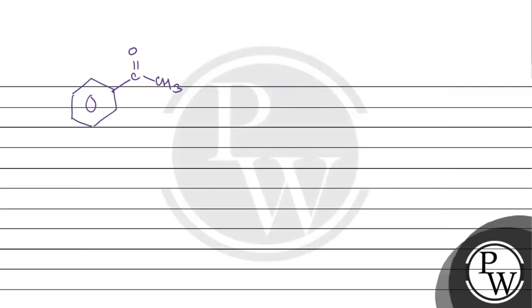So this in the presence of Zn-Hg and concentrated HCl will give CH2-CH3. This is ethylbenzene.